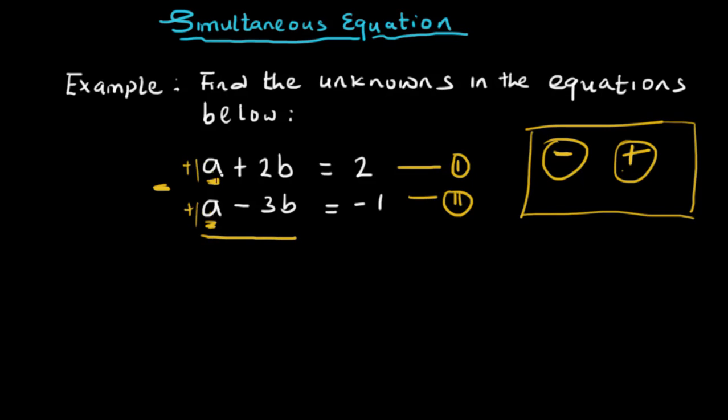If we subtract, we will be having a minus a, which is 0. So a cancels a — a minus a is 0. That is why we are subtracting: so that we can eliminate one variable.